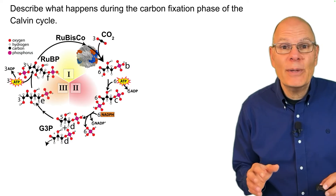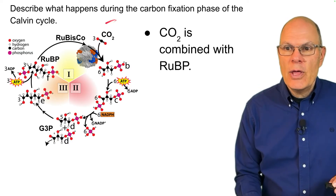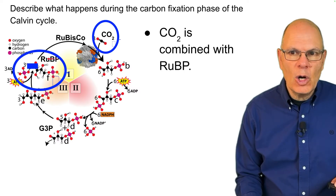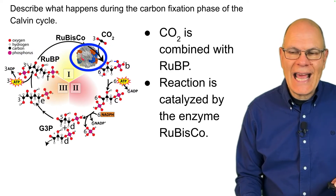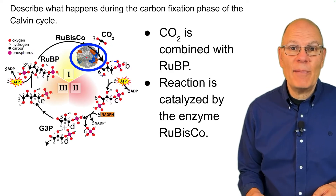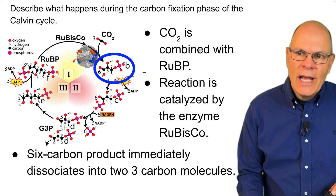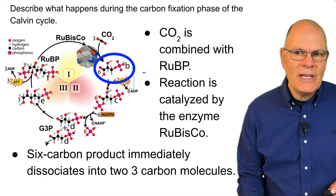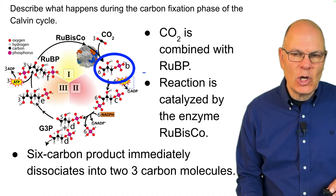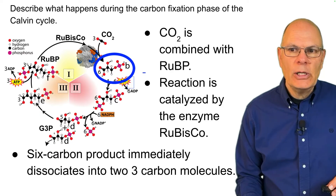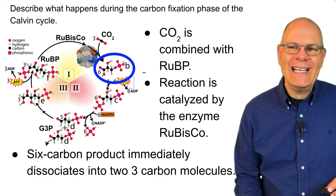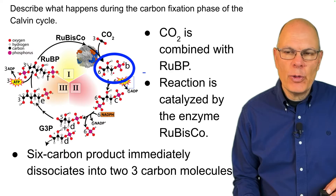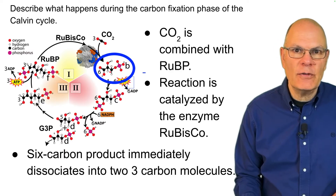The fixation phase begins as carbon dioxide is combined with RuBP. That reaction is catalyzed by the enzyme Rubisco — fun fact, that might be the most abundant protein on Earth. It creates a six-carbon product which isn't shown. RuBP has five carbons and CO2 has one carbon, so you'd think that creates a six-carbon product, but immediately that six-carbon product dissociates into two three-carbon molecules. That's how we end the carbon fixation phase.